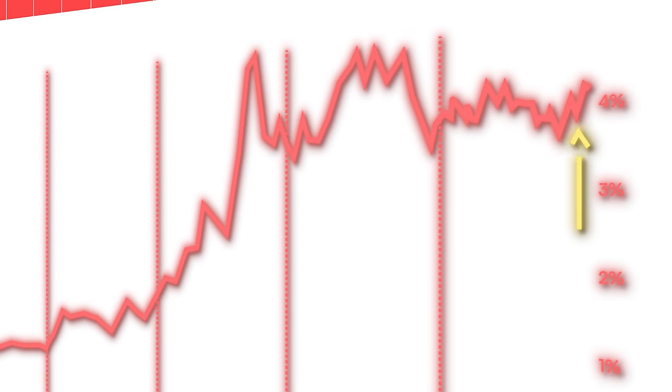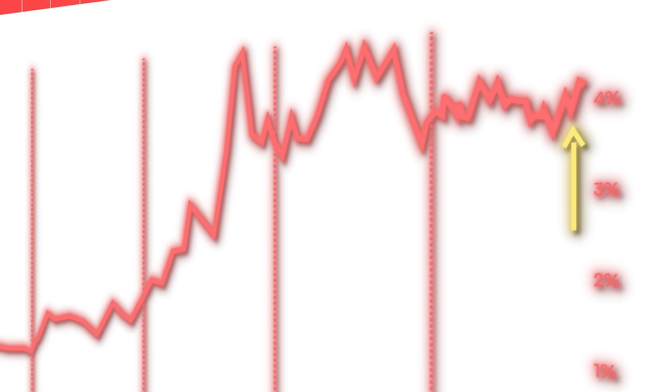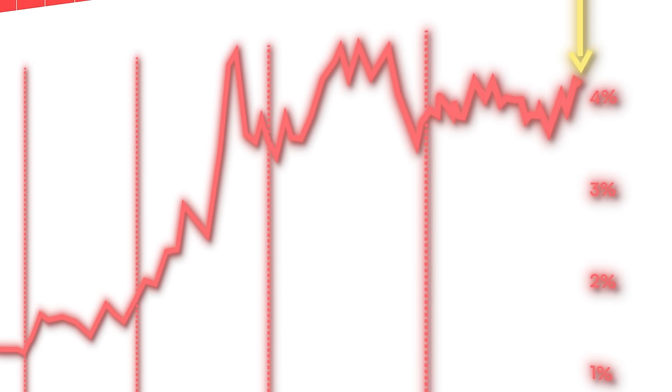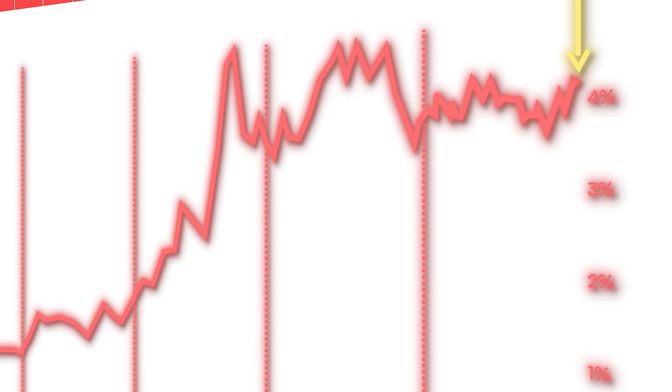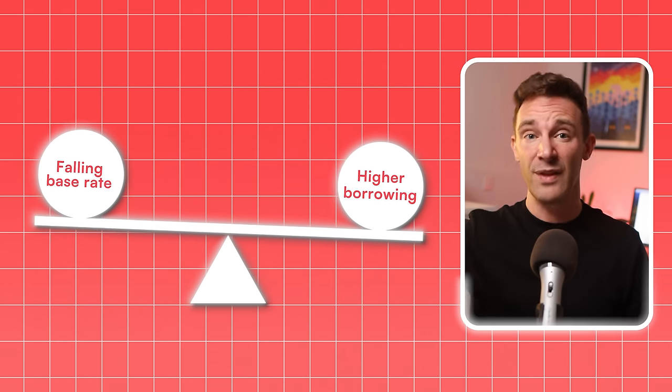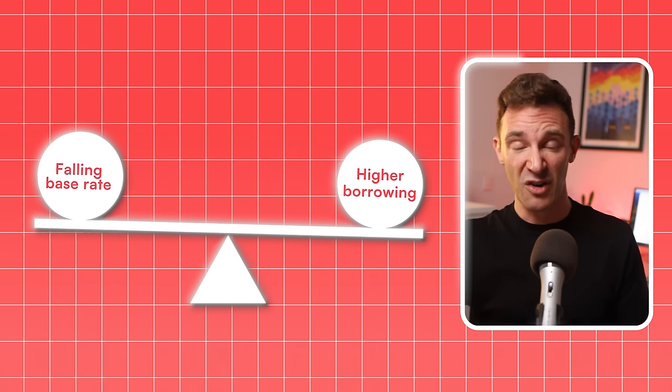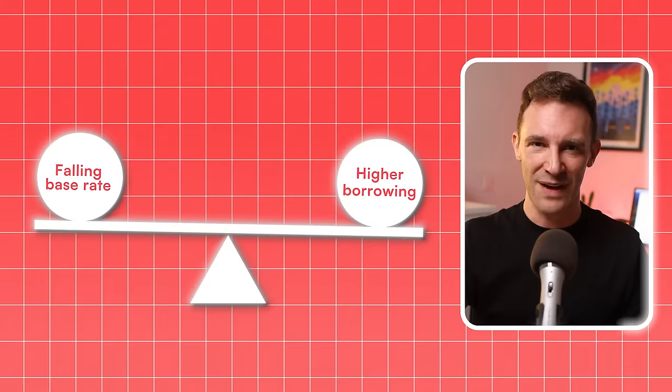To give you a real example of the effect this has, let's look at the five-year swap rate. A month ago, before the budget, it was sitting at about 3.8%. Now it's jumped to nearly 4.1%. And remember, this is what lenders use to price their fixed-rate mortgages. So what does all this mean if you're looking at getting a mortgage for a new purchase, or if your current fixed-rate deal is coming to an end? Well, I've been speaking to mortgage brokers across the country, and they're telling me that based on what we're seeing right now, the most likely scenario is that mortgage rates are going to stay pretty much where they are for the next little while. On the one hand, you've got the falling base rate. On the other, you've got worries about higher borrowing and potential inflation, and it all balances itself out.